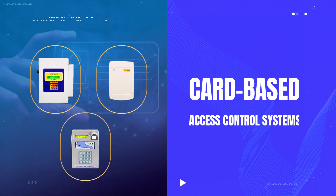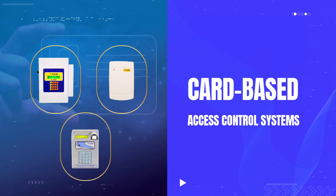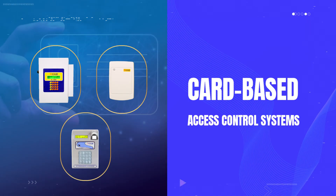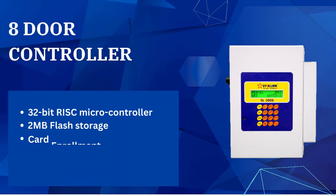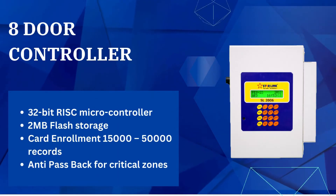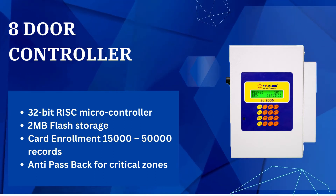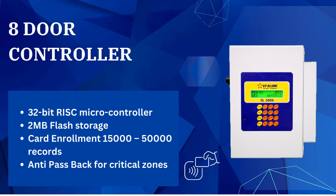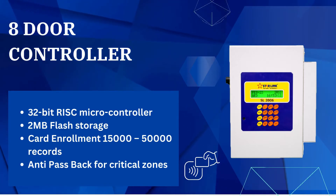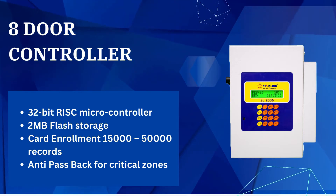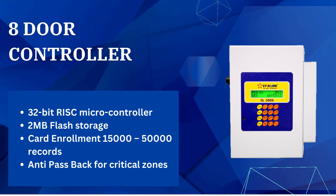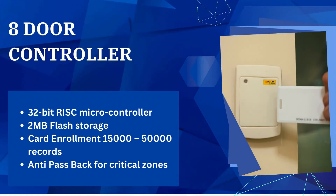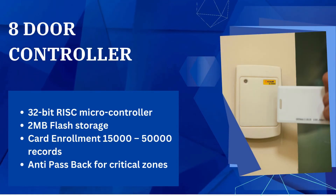Let's explore some models of card-based access control systems shaping the landscape of modern security solutions. Our first model is the 8-door controller, featuring a 32-bit RISC microcontroller, 2MB flash storage, and the capability to manage up to 15,000 to 50,000 users across 8 doors. This versatile system includes time-based access control, anti-pass back for critical zones, leak readers on each door, and integration with electromagnetic locks.